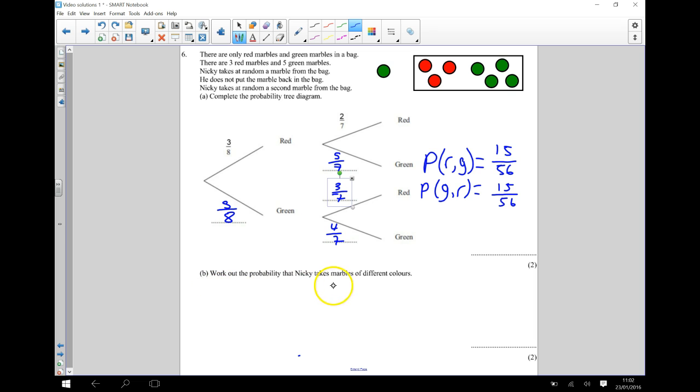So the probability that Nicky takes marbles of different colours, they're the only two scenarios, and we're going to add those together. So we're going to do 15 over 56 plus 15 over 56, and that's going to give me 30 over 56.